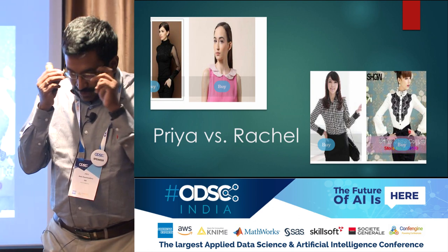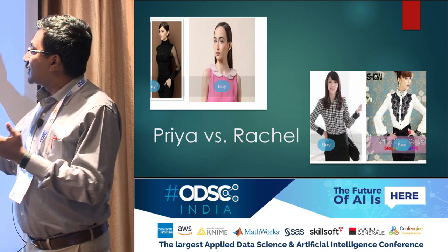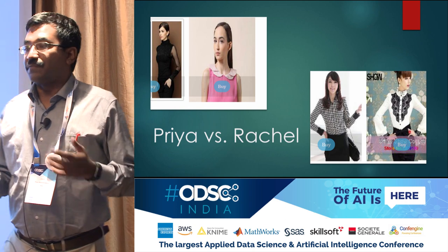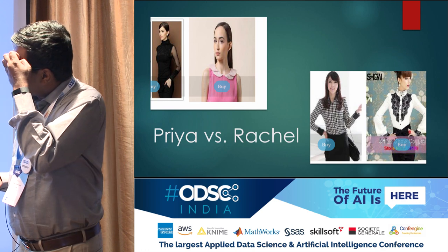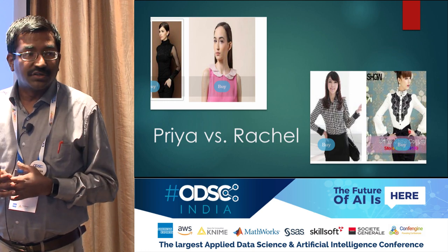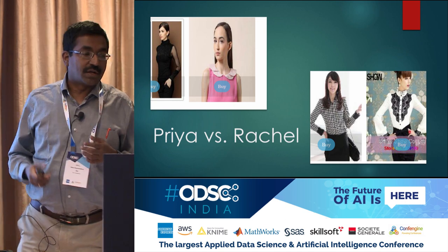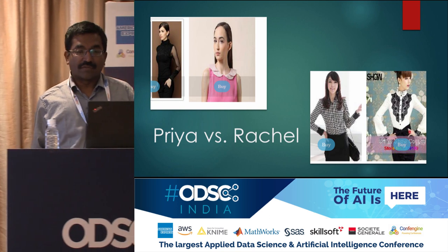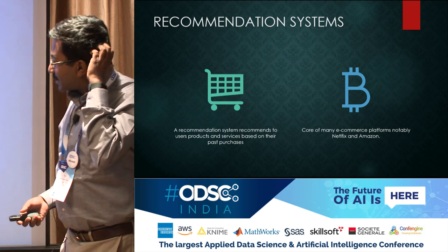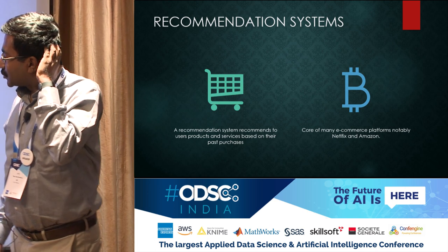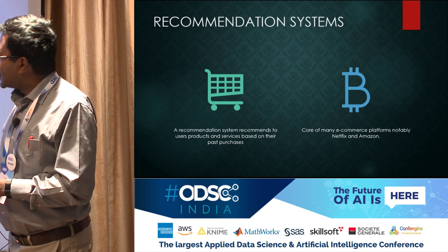Basically what we are seeing is that there are two users shown here and their recommendations are different. A fashion product has a lot of detail, and the question is how does one capture that amount of detail. As we heard this morning, we should build up from different layers of abstraction.